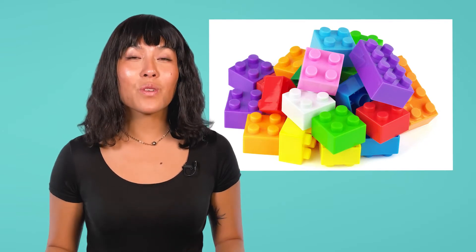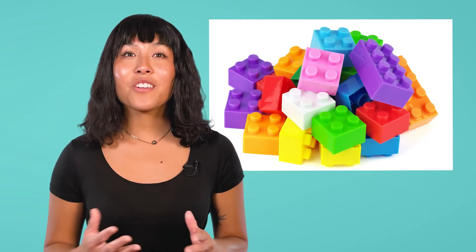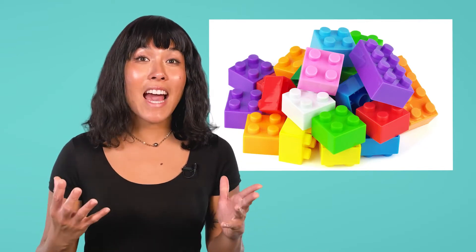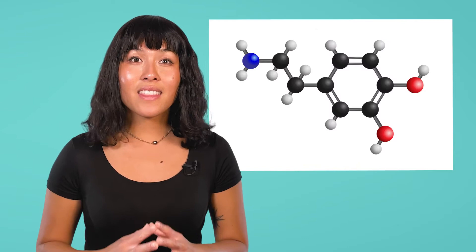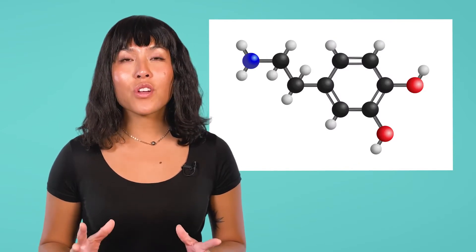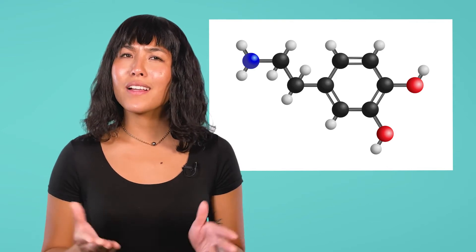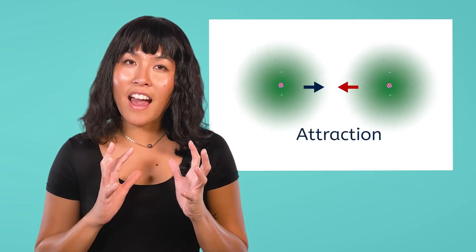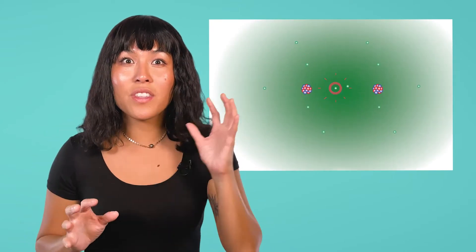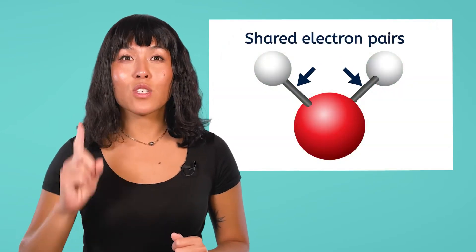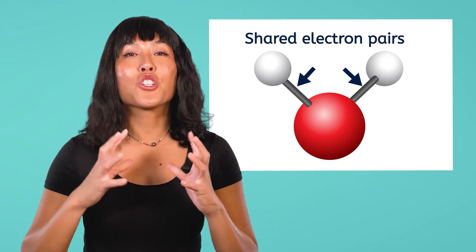The reason carbon is so versatile relates to bonding. In an earlier lesson, we discussed how bonds connect atoms to form molecules. In this model of a dopamine molecule, the bonds are shown as gray sticks. When atoms come together, they can share outer electrons with other atoms to become more stable. In molecular models, each stick represents one pair of electrons being shared between two atoms.